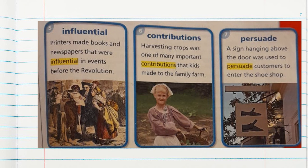Influential: printers made books and newspapers that were influential in events before the revolution. Contribution: harvesting crops was one of many important contributions that kids made to the family farm.